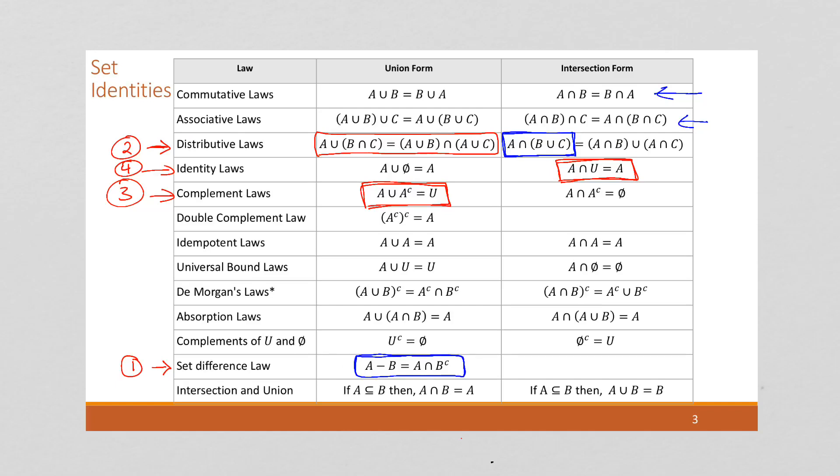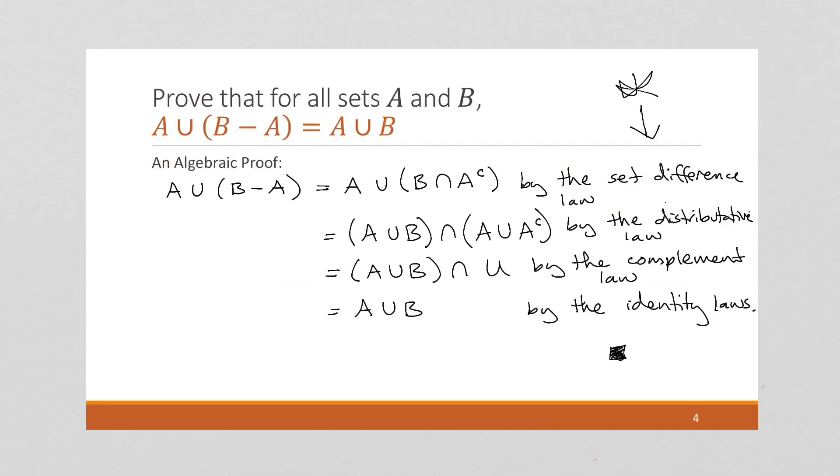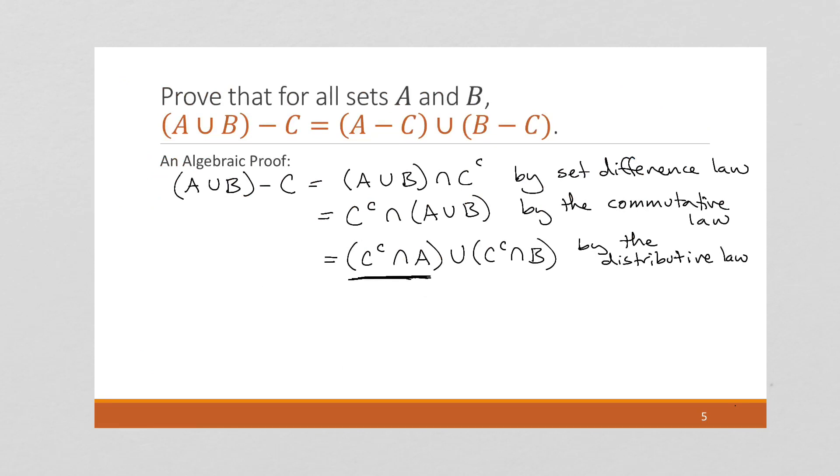But notice here, once again, they're out of order. Here it becomes set intersect set complement. Here we have the set complement first, so we need to use the commutative laws again.